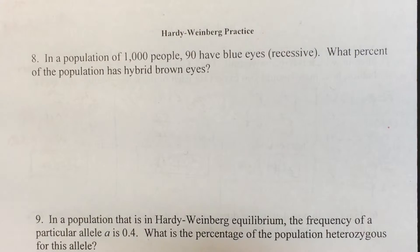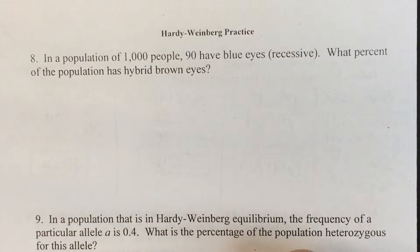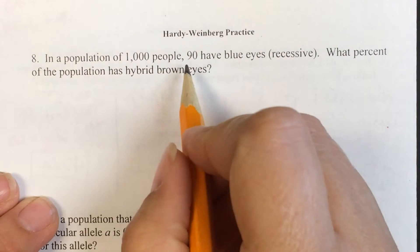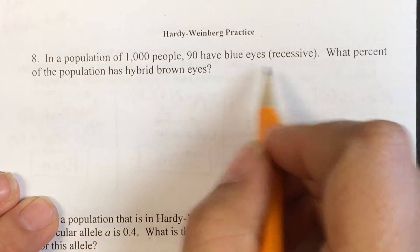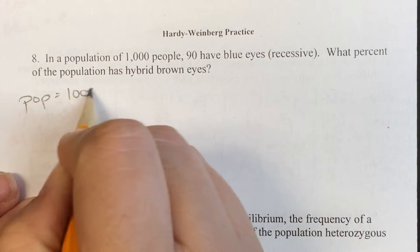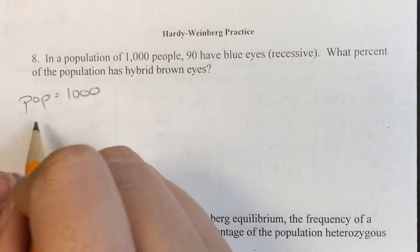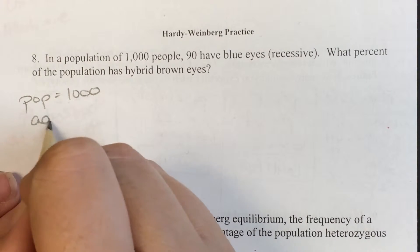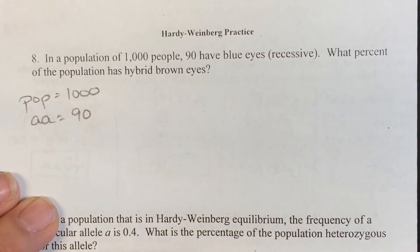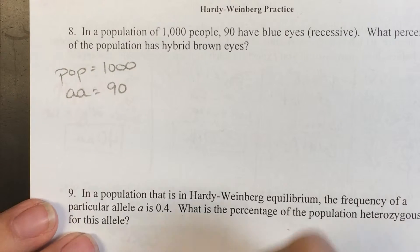In a population of 1,000 people, 90 have blue eyes — which is recessive. The question asks: what percent of the population has hybrid brown eyes? So if 90 out of 1,000 have blue eyes, our little a little a is 90, and we need to convert that to a percentage.